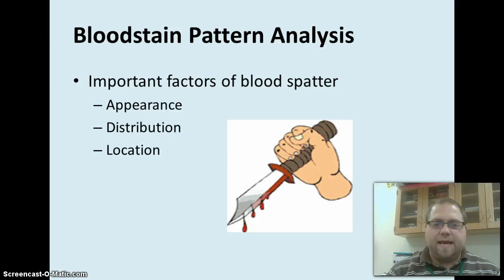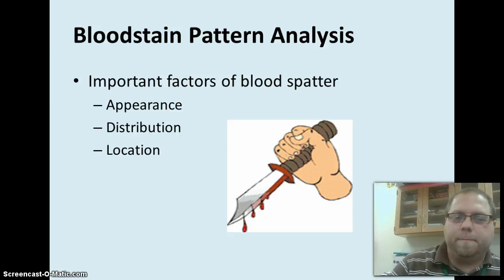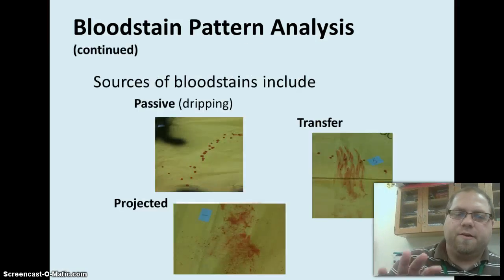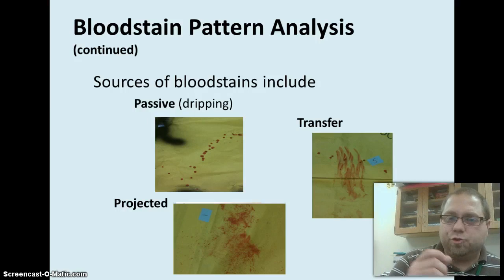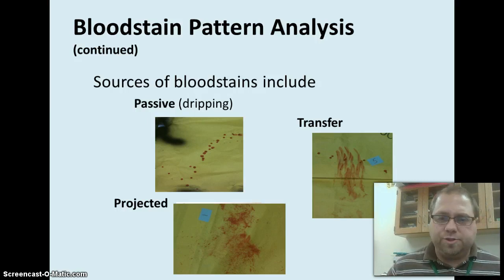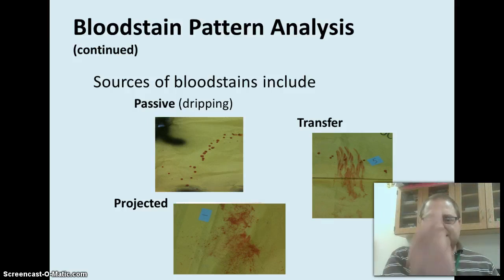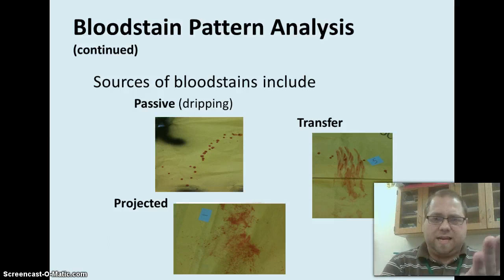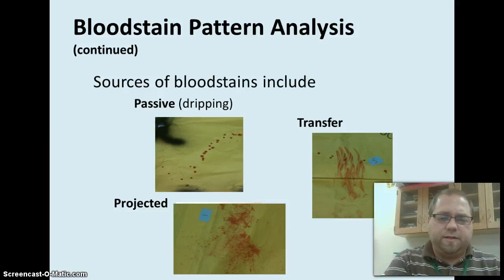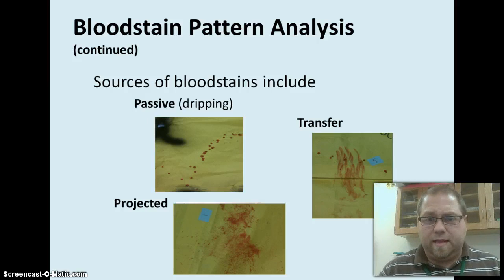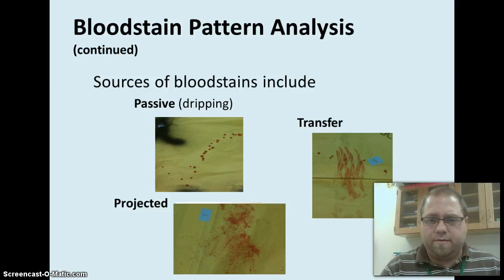Let's look a little bit at blood stain pattern analysis, or blood spatter. Some of the factors we have here are appearance, distribution, and location. Here are some different types of blood stains you may see. A passive stain is a dripping stain — say you've cut your arm, you're standing with your arm down, and it's just kind of dripping down your hand onto the floor; that's just gravity causing that stain. A transfer stain would be if you had blood on your hands, you touched a surface or wiped it, transferring that blood. And then a projected stain deals with actual blood coming from a body where the projection of that is causing it to land on the surface.